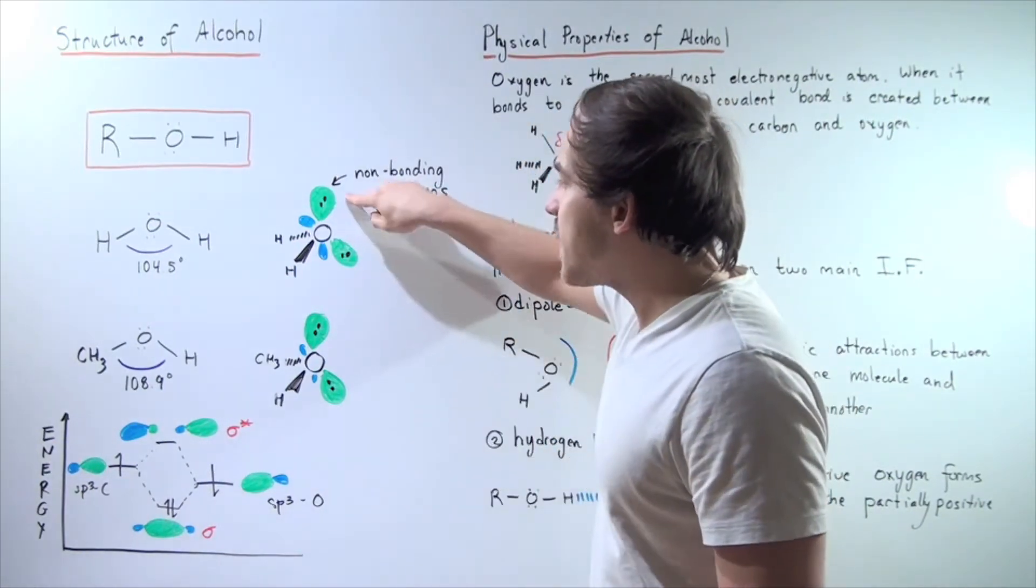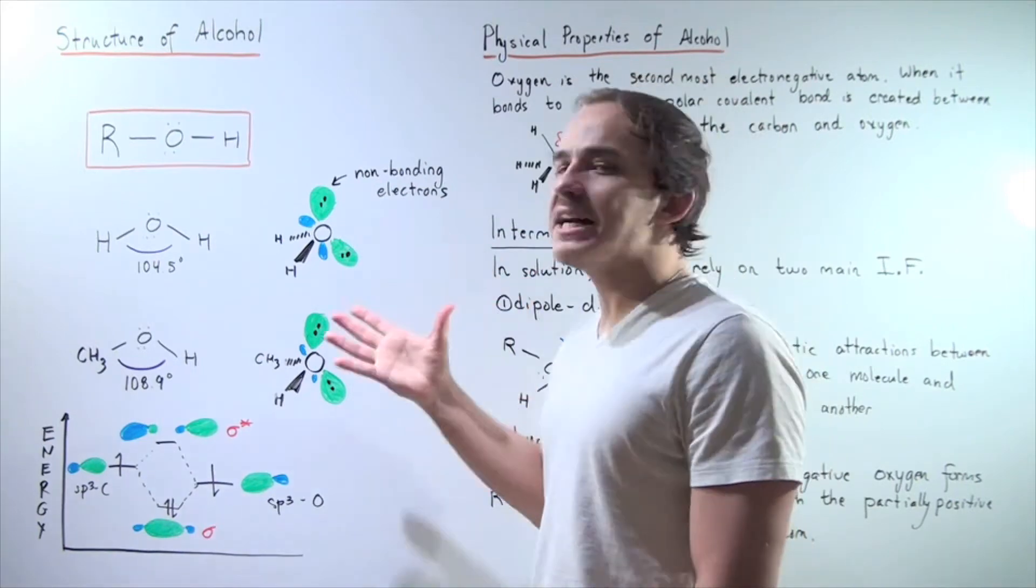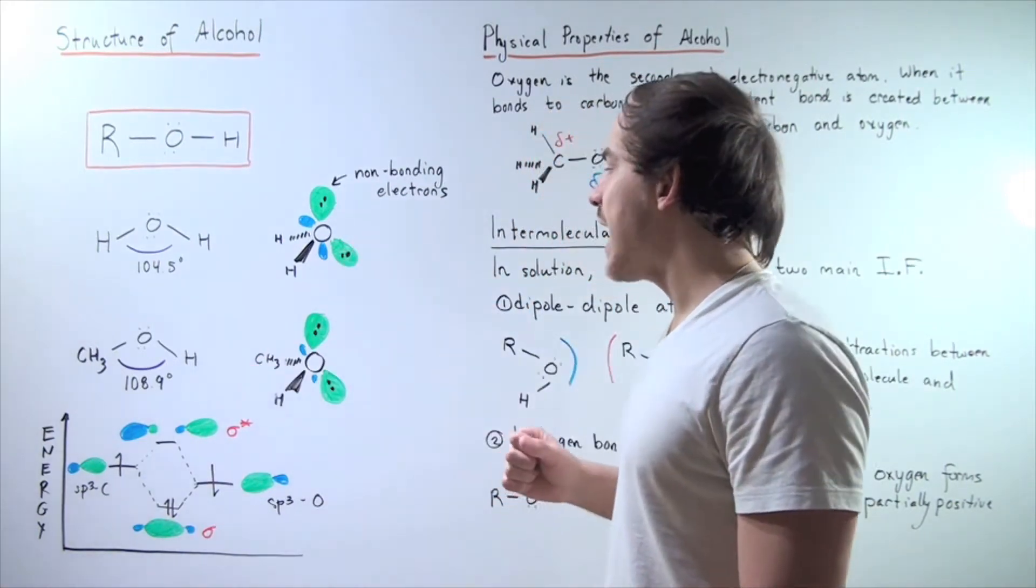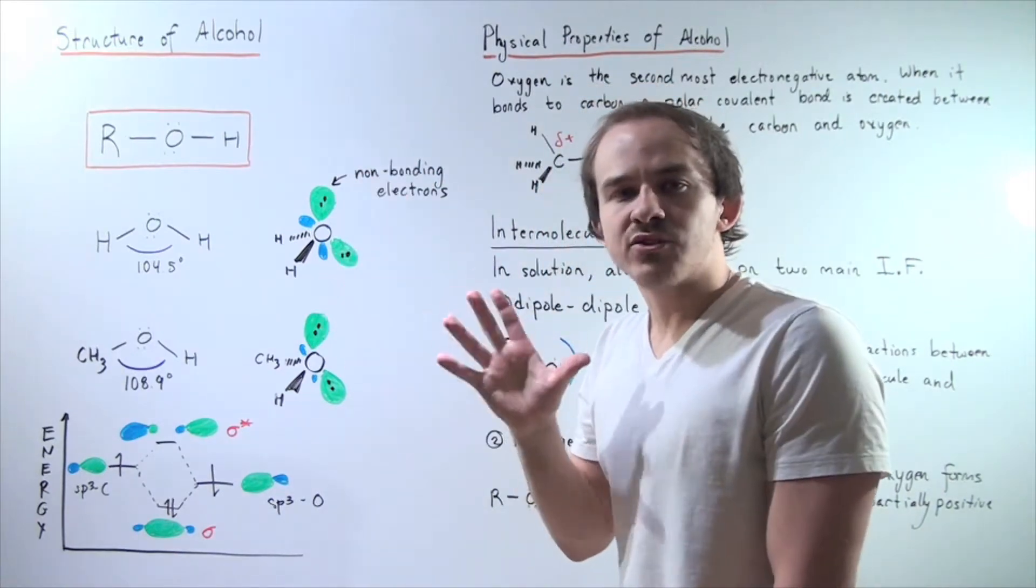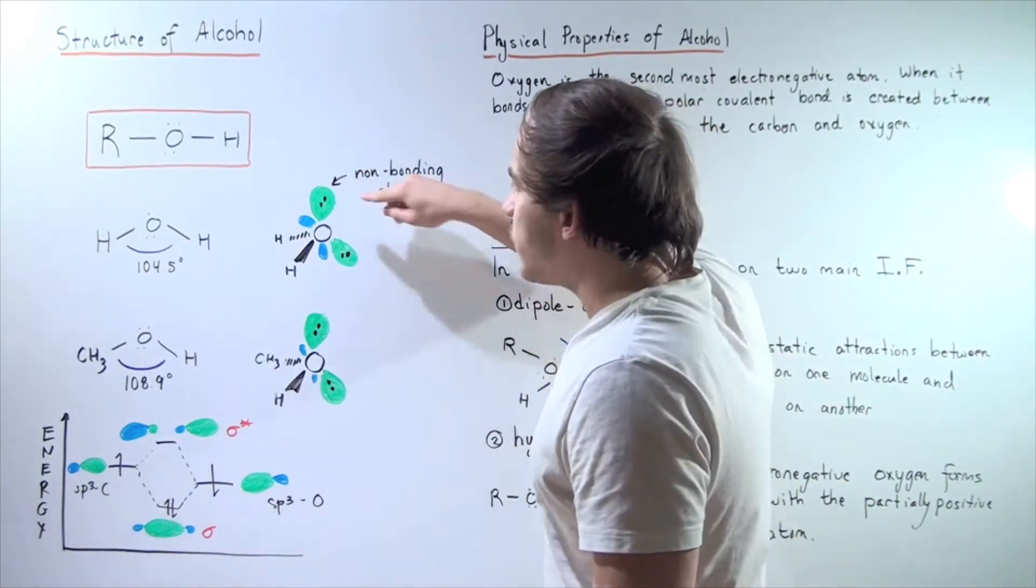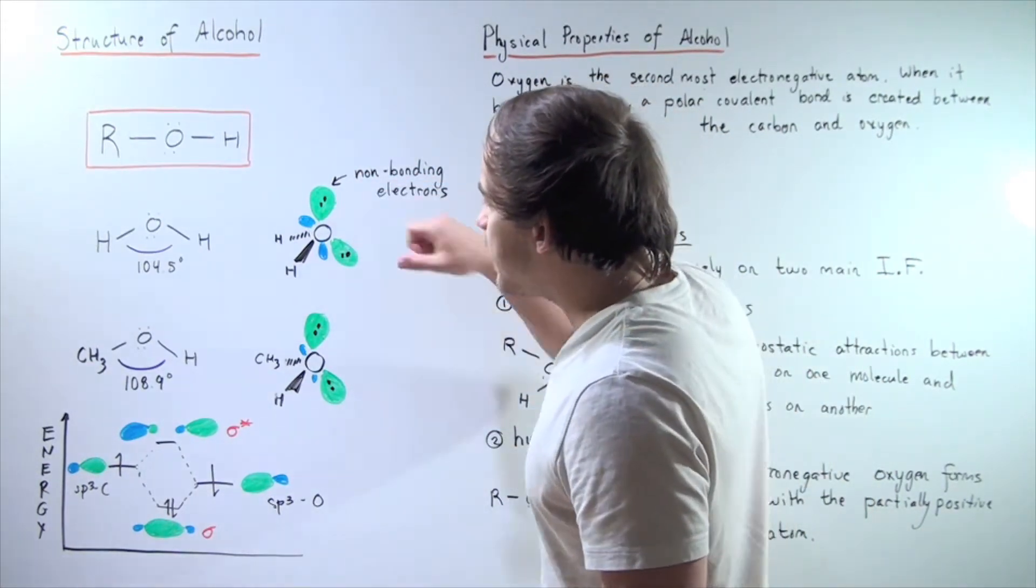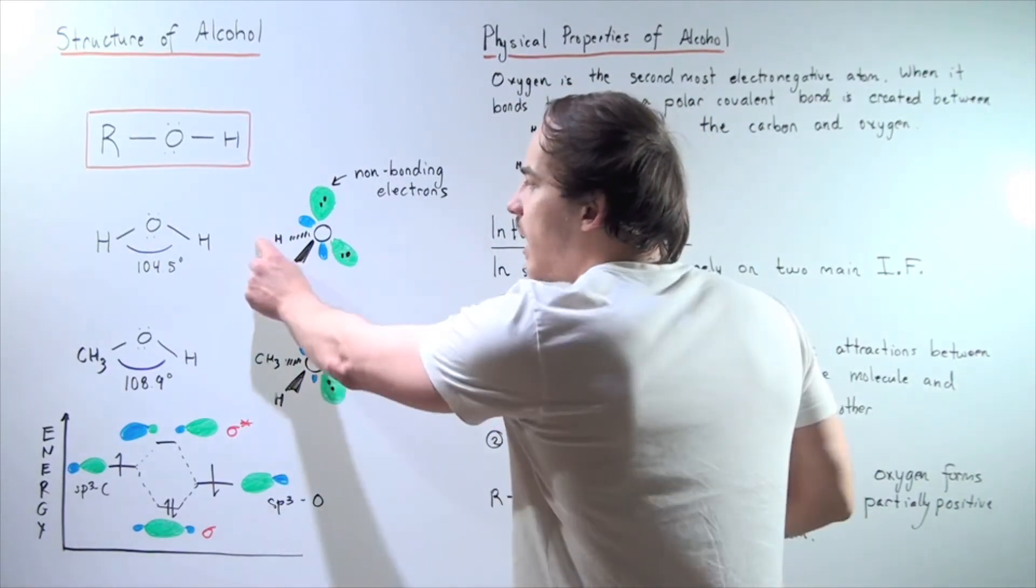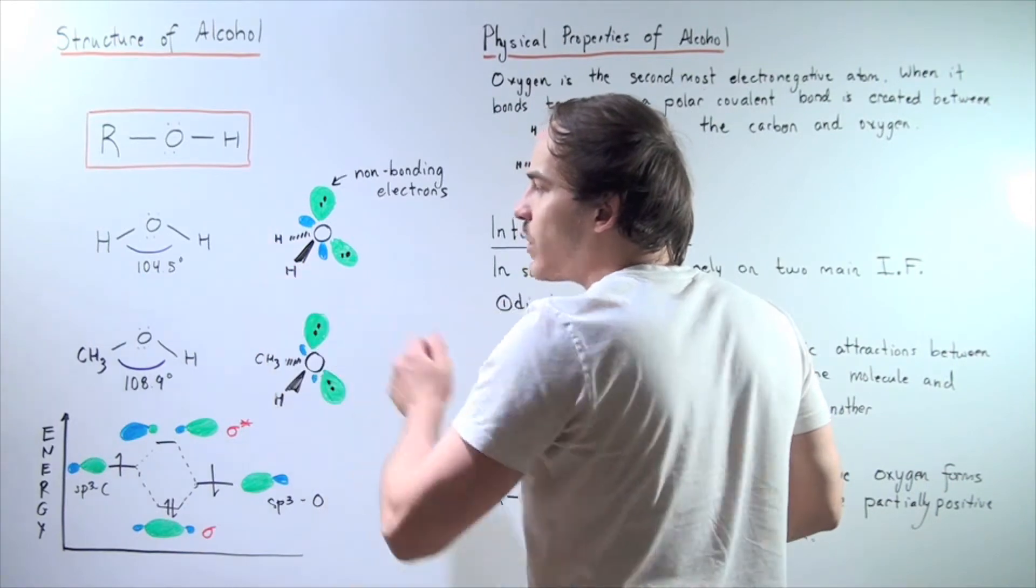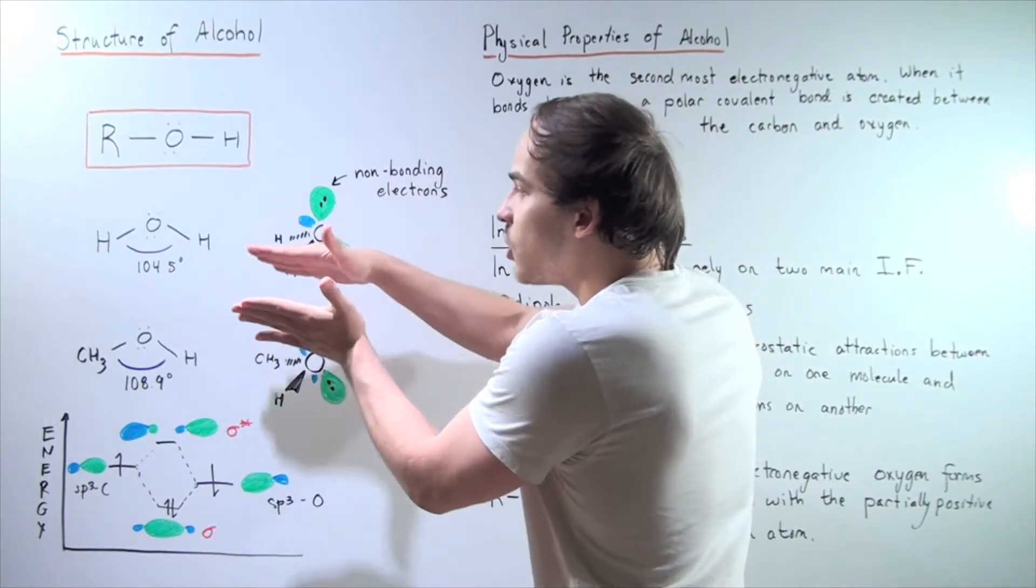They both have a pair of electrons but they are not bonding with any other atom. Notice that there is a lot of electrostatic repulsion between these two electrons and these two electrons. They will tend to push down on these two atoms, on these two H atoms, pushing them closer together.